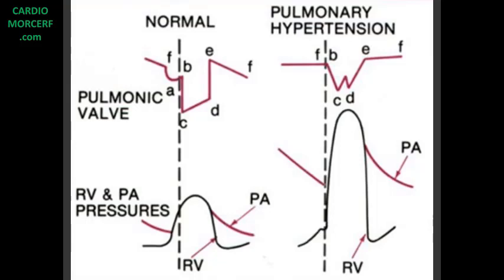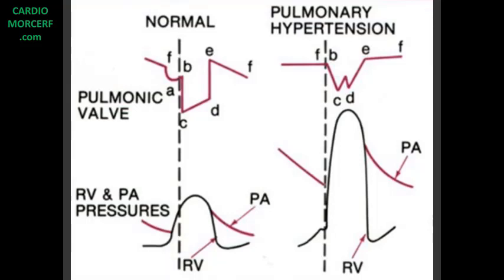In normal conditions, the pulmonary valve moves from an anterior position to a posterior position during diastole. It also presents the so-called A-wave immediately before the valve opening. This A-wave exists because the pulmonary artery pressure is normally too low, and the right atrial contraction increases the diastolic pressure inside the right ventricle enough to initiate the opening of the pulmonary valve.